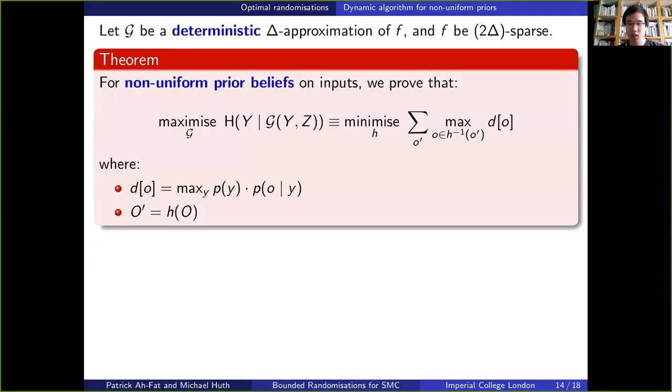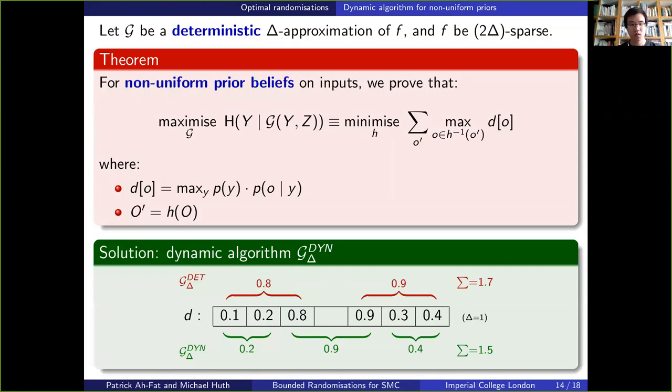So let's now discuss the case where we have a non-uniform prior belief on the inputs. We can show you that our optimization problem is equivalent to a simpler minimization problem, which involves a function d. Instead of dwelling upon this equation, I'll show you an illustration of this optimization problem and I'll discuss the solution.